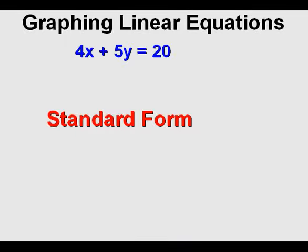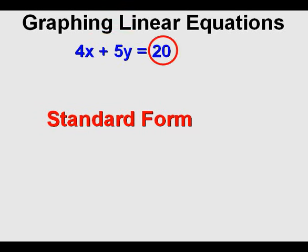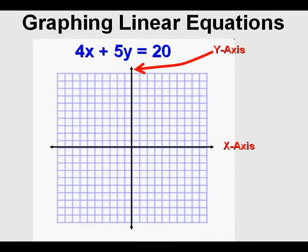Let's talk about standard form first. This is an equation in standard form: 4x plus 5y equals 20. The simplest explanation of an equation in standard form is that the variables are on one side of the equation and a number is by itself on the other side. There are a couple other rules, like the x variable has to be positive and the coefficients have to be the smallest integers possible, but we won't worry about those conditions.